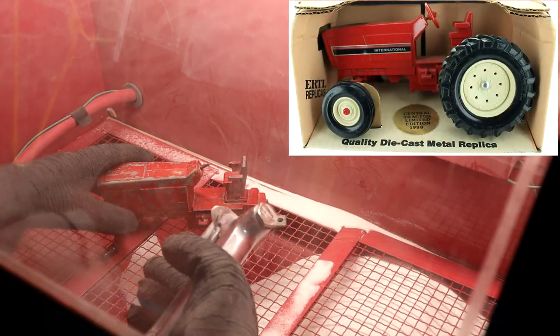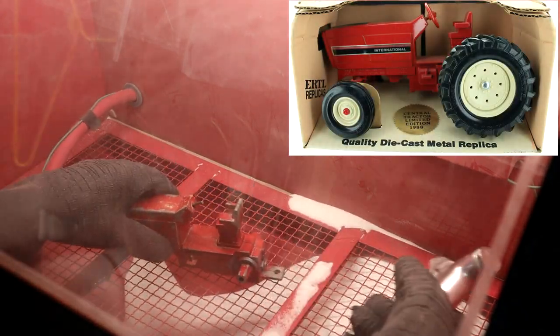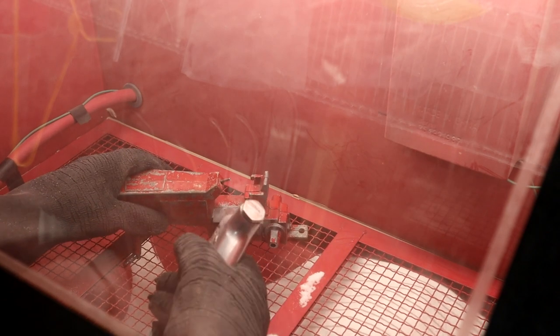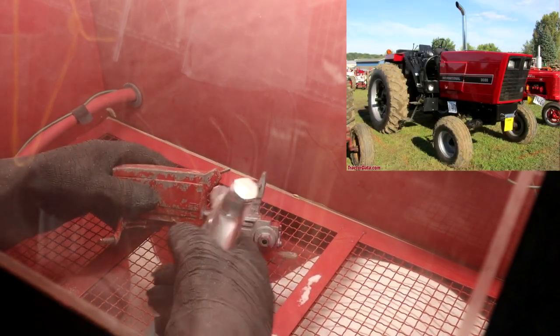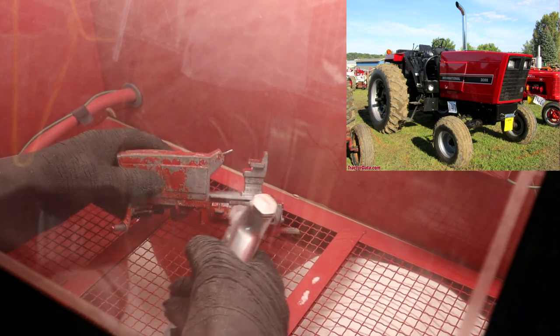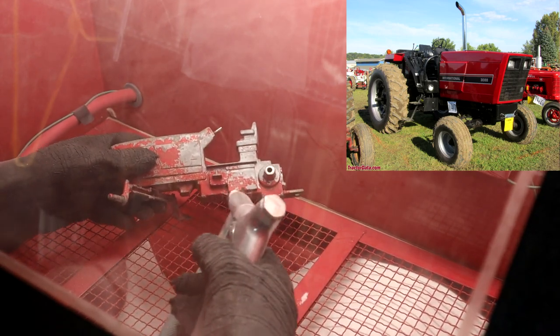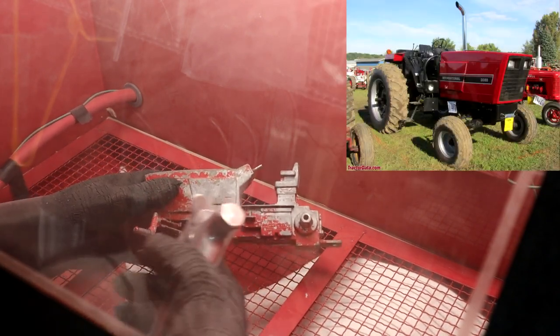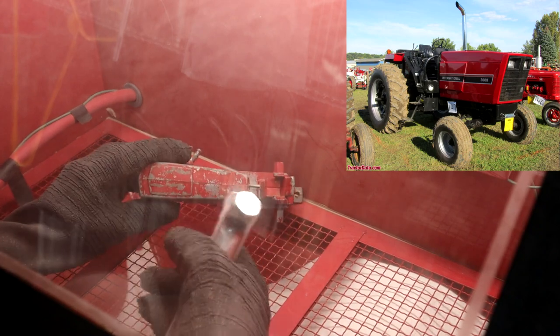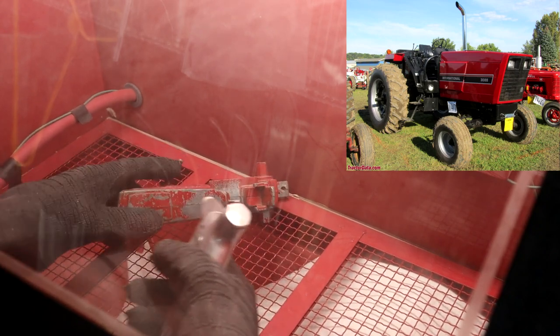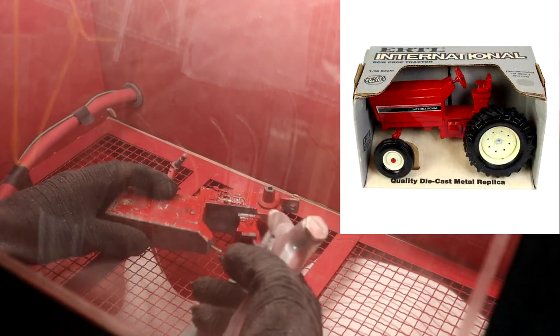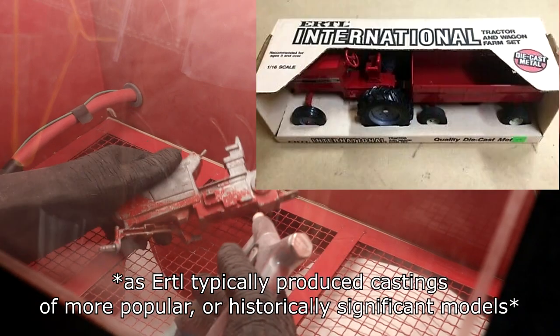Here are some interesting facts about this casting, Ertl number 415. It's based off of the International 3088 in real life. The 3088 was produced from 1981 to 1985. And it was the logical successor from the International Harvester 786. And it wasn't that popular. Actually, it had a fairly limited run in just producing around 1,000 units. That makes this casting kind of interesting from a standpoint of why Ertl would produce it.